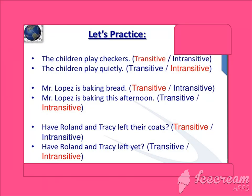Now for practice: 'The children play checkers' — transitive. 'The children play quietly' — intransitive, because you don't know what they played. 'Mr. Lepoz is baking bread' — transitive. 'Mr. Lepoz is baking this afternoon' — intransitive, no direct object. 'Have Roland and Tracy left their course' — transitive. 'Have Ronald and Tracy left yet' — intransitive. Where you have a direct object it is transitive; where there is no direct object, it is intransitive.